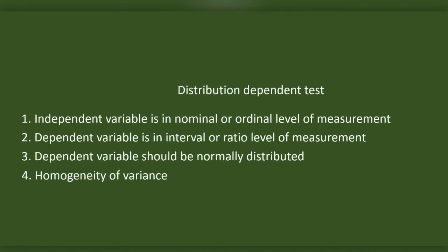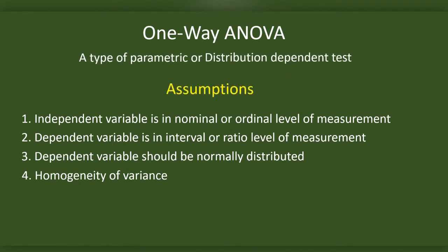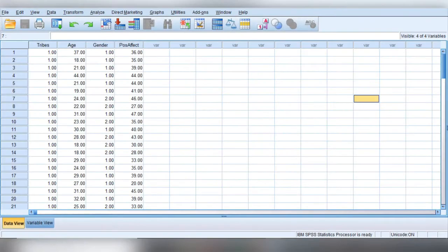ANOVA is a distribution-dependent test or parametric test with these assumptions. Using one-way ANOVA, let us see if the null hypothesis tribe 1, tribe 2, and tribe 3 do not differ in positive affect. We will do the analysis using SPSS.